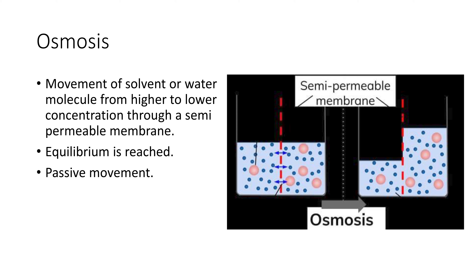Osmosis is the movement of solvent or water molecules from higher concentration to lower concentration through a semi-permeable membrane. This process is carried out till an equilibrium is reached, so it is a passive movement. Osmosis takes place in liquid medium only, but diffusion takes place in any medium like solid, gas, and liquid.